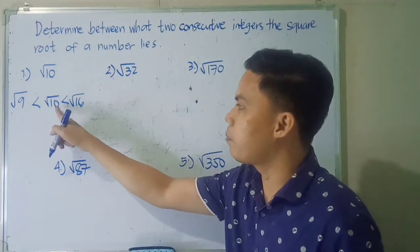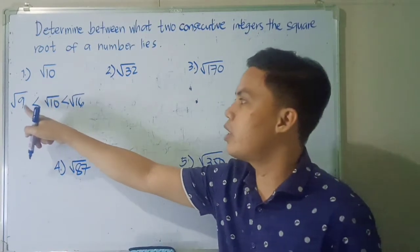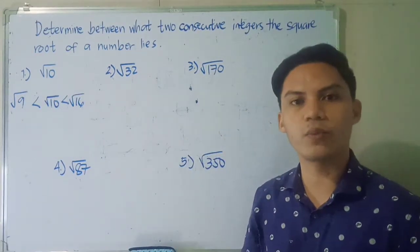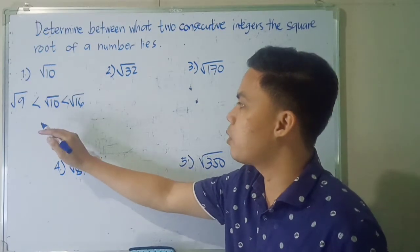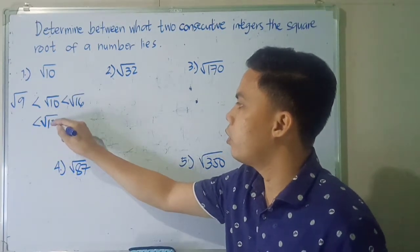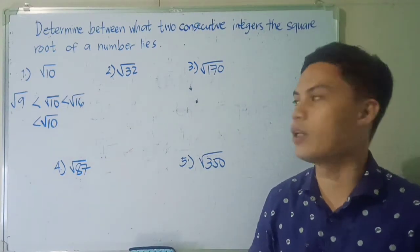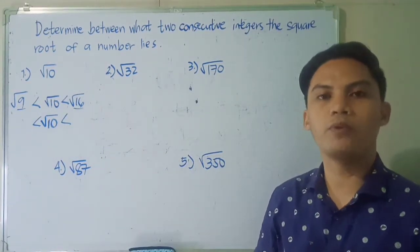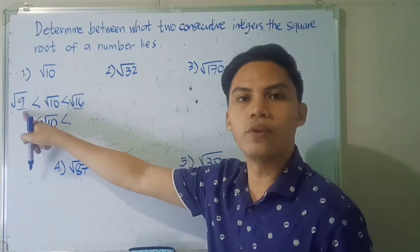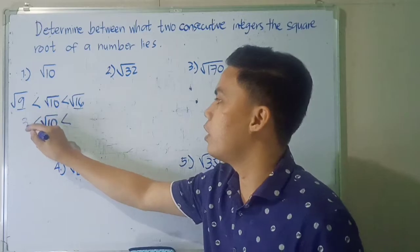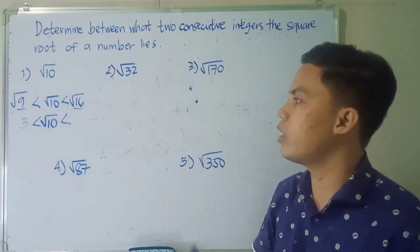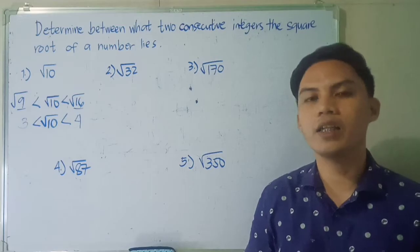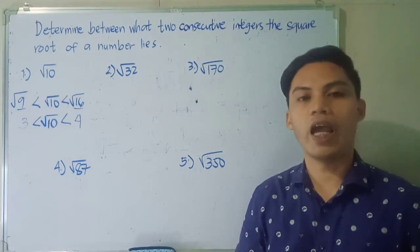So 10 is between the numerical values 9 and 16, where 9 and 16 are also perfect squares. We place them inside the radical sign as well. Then we simplify by getting the principal roots of our two perfect squares. What is the square root of 9? That is positive 3. And what is the square root of 16? That is 4. So this means the square root of 10 is between the two integers 3 and 4.